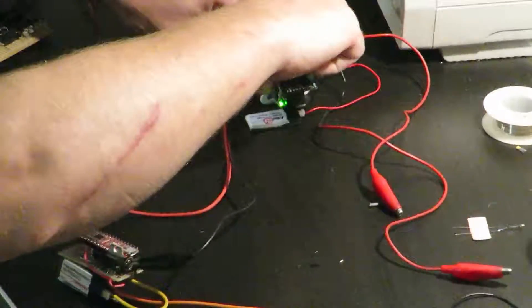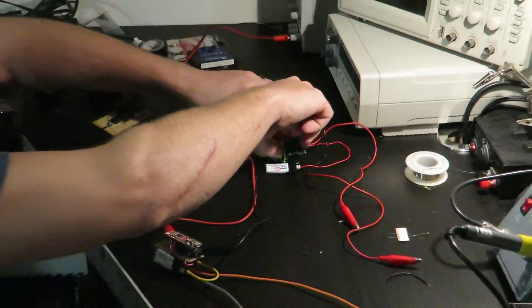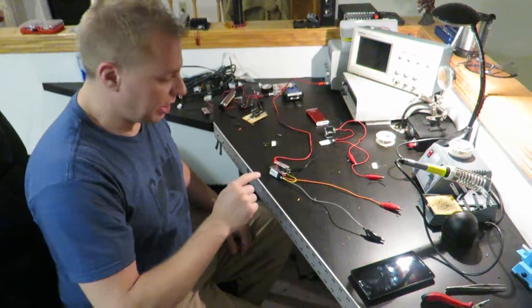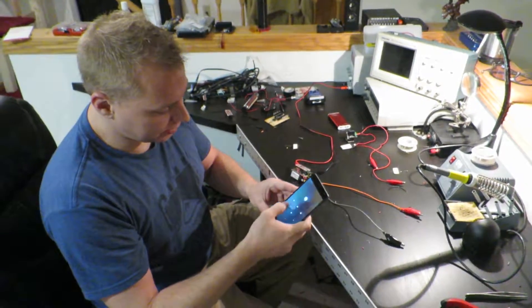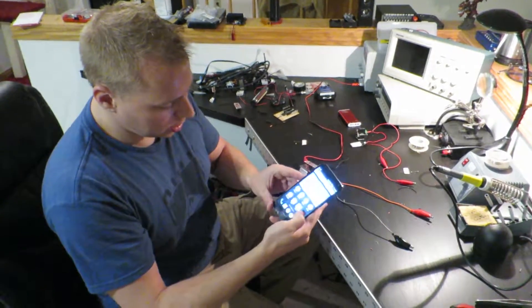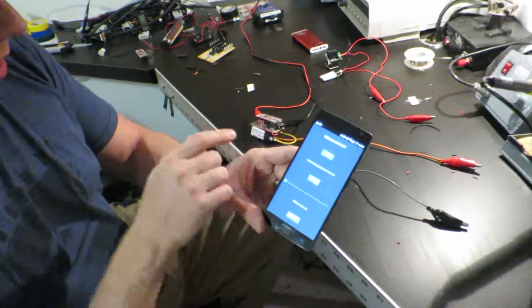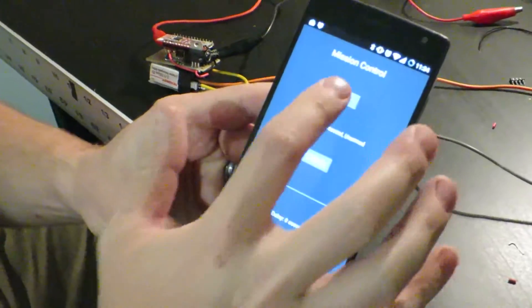So that worked really well and it allowed me to launch my rockets without being too close to hitting a button. But I've improved on it and now I've got an Android app here that I've developed called Rocket Launcher. In it I connect here and I can hit arm.